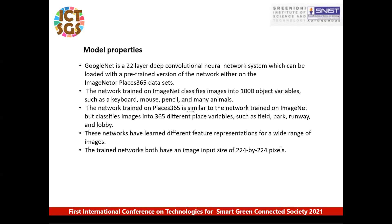This is the model used for developing the image classification algorithm. GoogleNet is a 22-layer deep convolutional neural network which can be loaded with a pre-trained version either on ImageNet or Places 365 datasets. The network trained on ImageNet classifies a thousand object categories such as keyboard, mouse, pencil, and many animals. The Places 365 dataset recognizes places like field, park, runway, lobby, and 360 more places. These networks provide a rich feature representation for a wide range of images, and these features could be extended for the dataset we prepared. The network input size is 224 by 224 pixels.